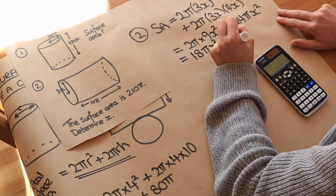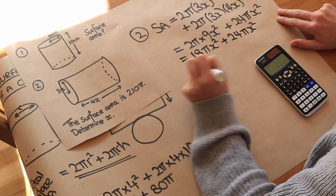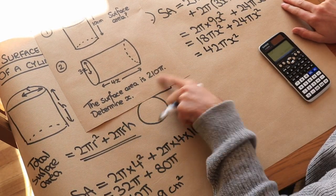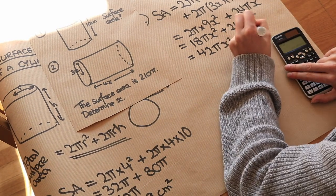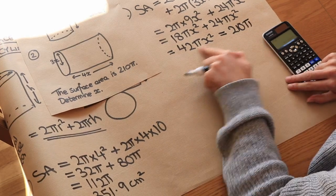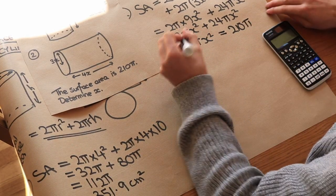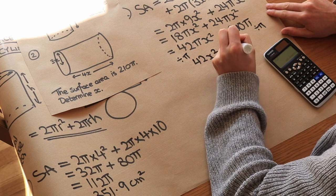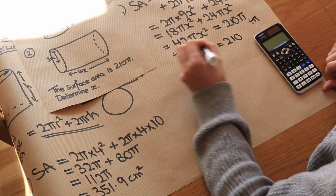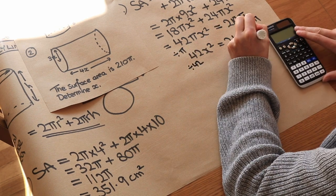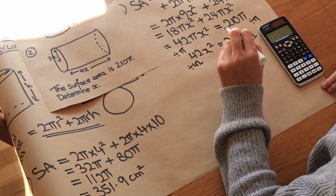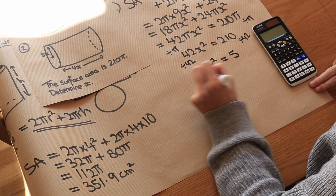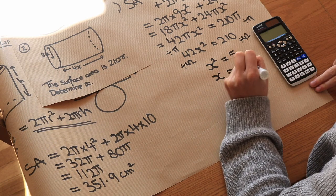Combining gives 18πx² + 24πx² = 42πx². We're told the surface area is 210π, so 42πx² = 210π. Dividing both sides by π gives 42x² = 210. Dividing both sides by 42 gives x² = 5, and taking the square root of both sides gives x = √5.